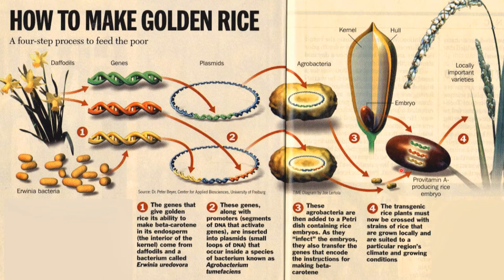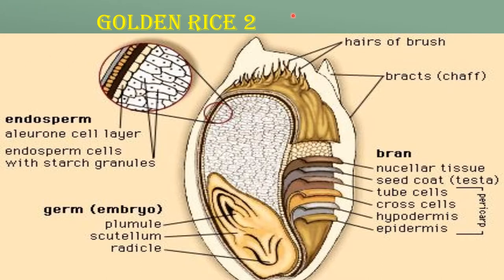This transformed rice plant must be crossed with strains of rice that are grown locally and are suitable to a particular region, climate, and growing conditions. This is how golden rice was synthesized. In 2005, a team of researchers at a biotechnology company produced a variety of golden rice called Golden Rice 2. They combined the phytoene synthase gene from maize with the original golden rice.